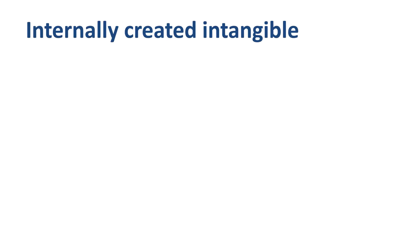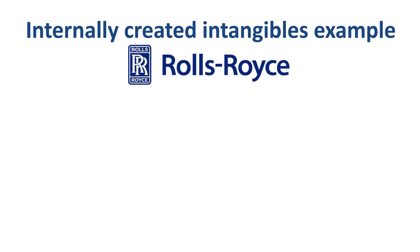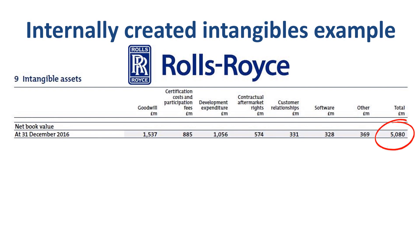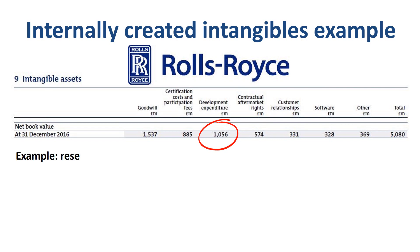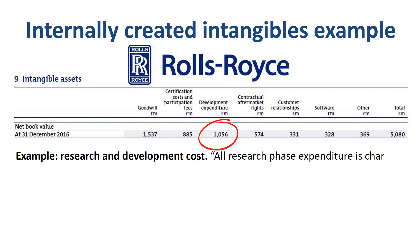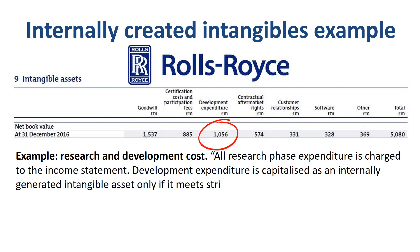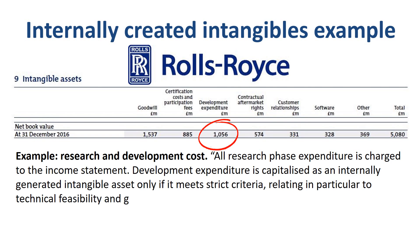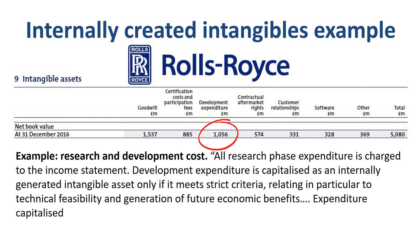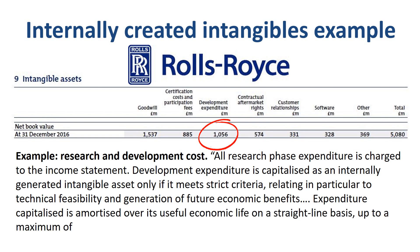An example of internally created intangible assets can be found in the annual report of Rolls-Royce, an engineering company focused on power and propulsion systems such as aircraft engines, headquartered in the UK. Total net book value of intangible assets at the end of 2016 was £5.1 billion, of which goodwill was the largest item at £1.5 billion, and capitalized development expenditure was second-largest at £1.1 billion. All research phase expenditure is charged to the income statement. Development expenditure is capitalized as an internally generated intangible asset only if it meets strict criteria relating to technical feasibility and generation of future economic benefits. Expenditure capitalized is amortized over its useful economic life on a straight-line basis, up to a maximum of 15 years from the entry into service of the product.